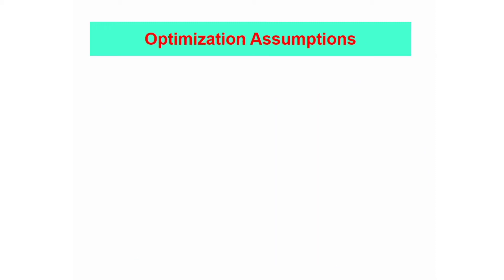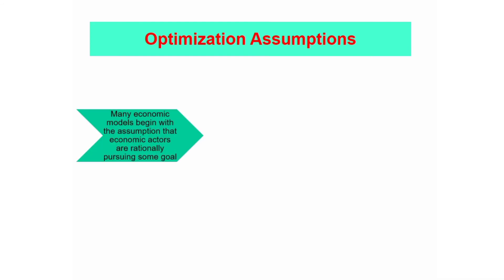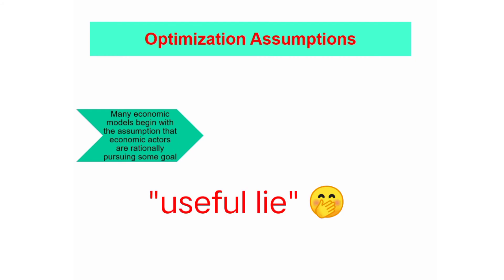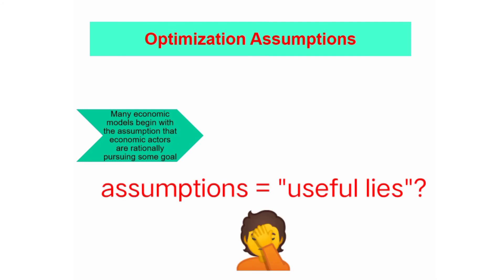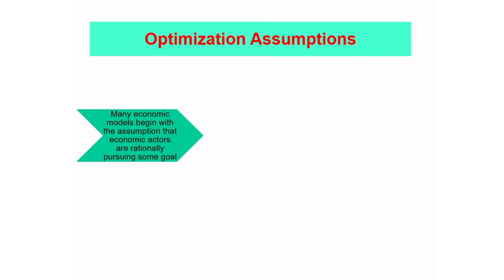The next feature is the optimization assumption. When doing economics, we usually assume that people behave rationally. By rational, we mean that people tend to choose the correct means to achieve their goals. But why do we assume something that we know to be false? The answer is because it's a useful lie. Economists tend to use simplifying assumptions — useful lies — to make the world comprehensible. We use these assumptions to build models, which are frameworks for trying to understand a part of the world, because without these assumptions, the world is too complicated to understand.